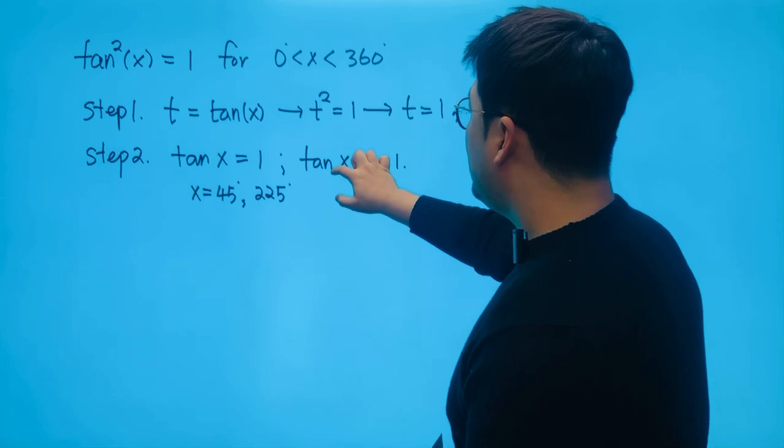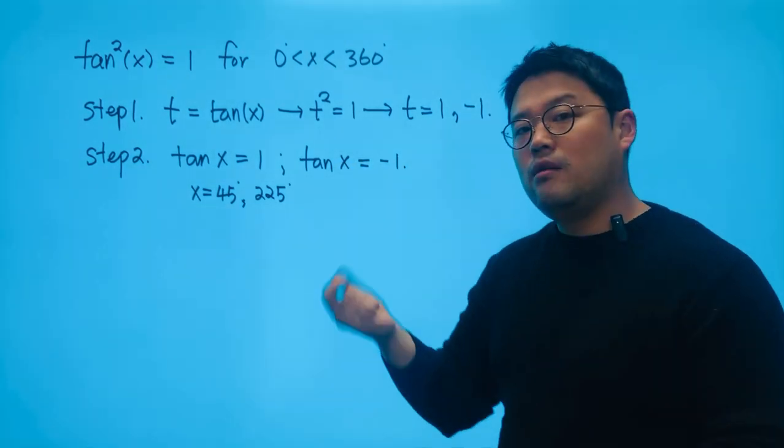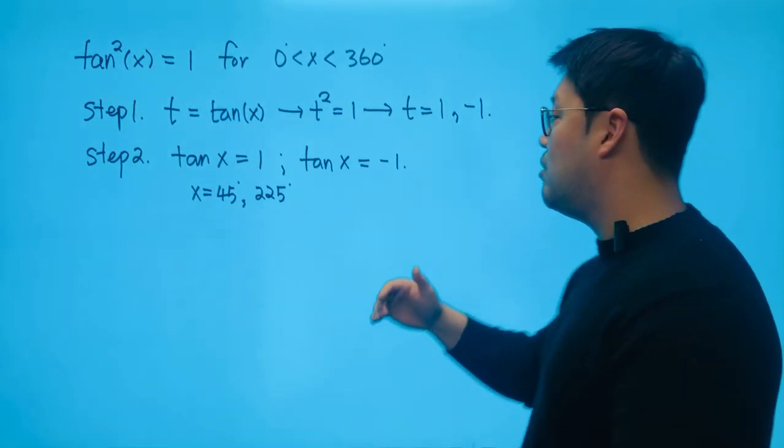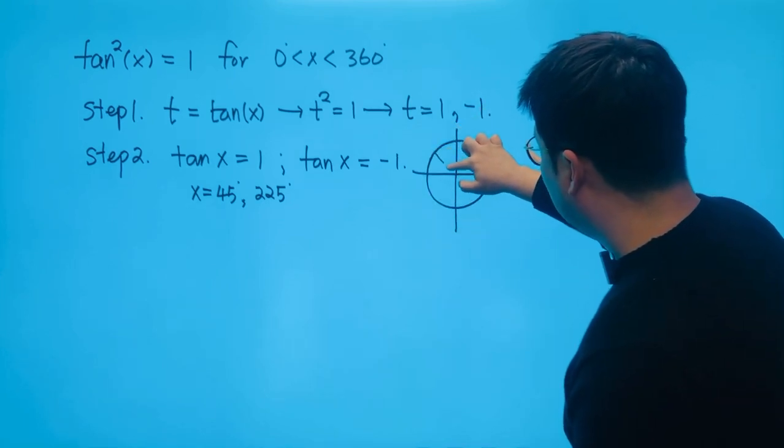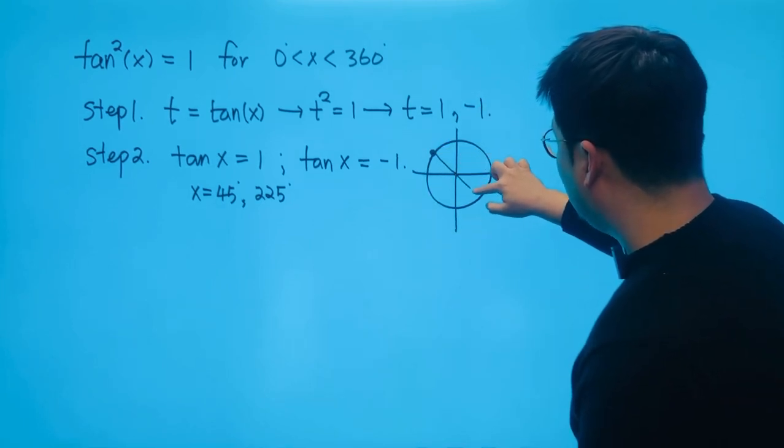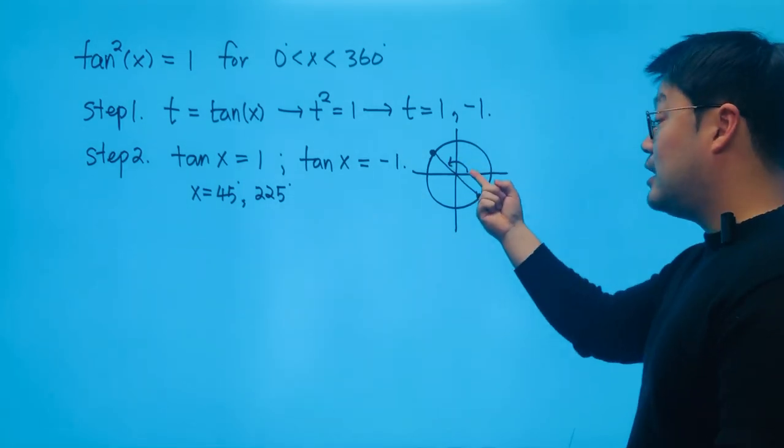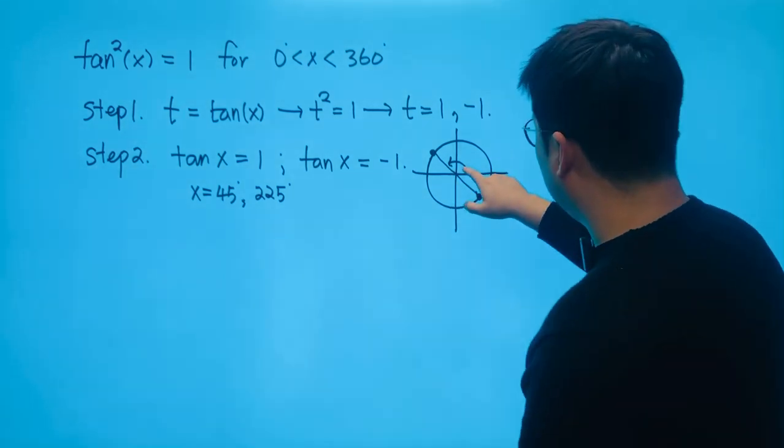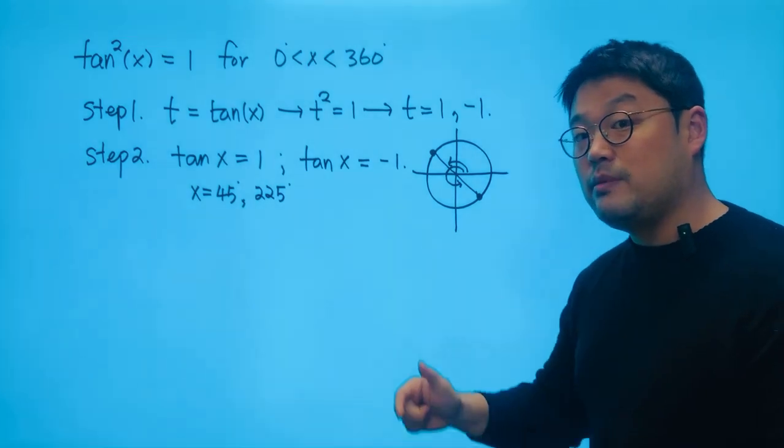But at the same time, when do we have the slope of the terminal arm being negative 1? We're going to find some terminal arm sitting in the second quadrant and the fourth quadrant. We get the rotated amount of angle, which becomes 135 and another one that keeps rotating all the way down here, which is going to be 315.